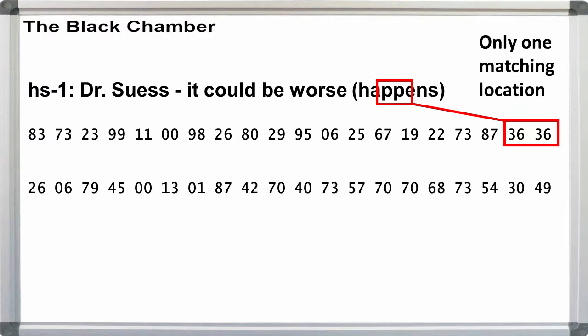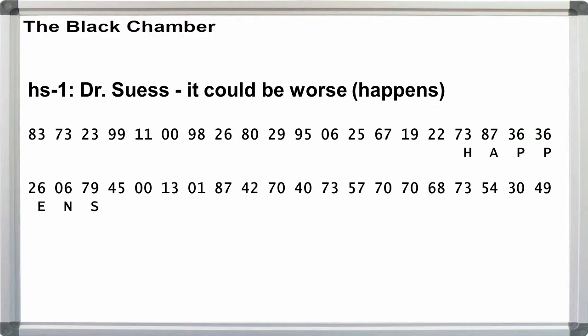Placing our hint, we get H is 73, A is 87, P is 36 and 36, E is 26, N is 06, S is 79. From here, if we recover the four letter keyword, we can immediately solve the crypt with that.